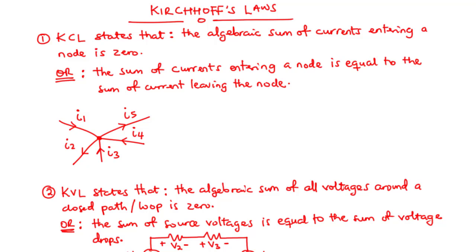We can demonstrate this by considering this network. Here we have five different currents either entering or leaving the node. To clearly understand this concept, KCL — Kirchhoff's Current Law — is saying that the algebraic sum of all these currents should be equal to zero. We are going to consider currents entering the node to have a positive value, and currents leaving the node to have negative values.